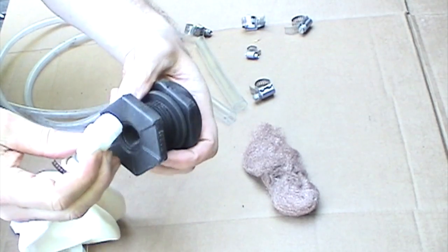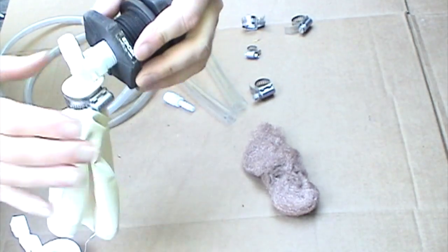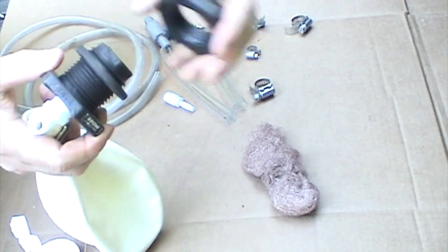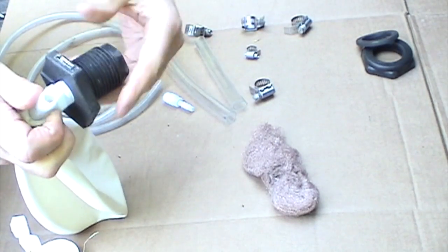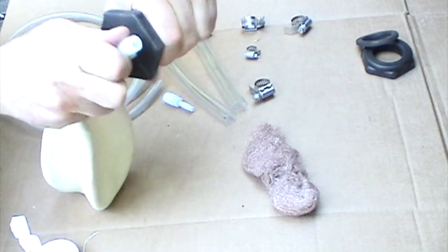And then we screw this into the bulkhead fitting. Take this apart for the moment. Let's make it a good firm hand tight seal. That should do well.